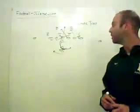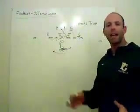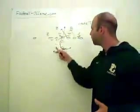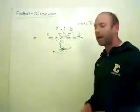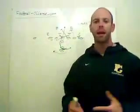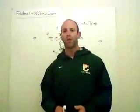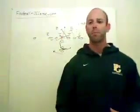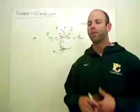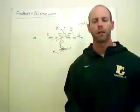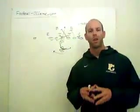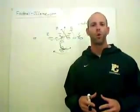The inside trap is a really simple play that we can run out of any formation that you want to run it out of. You can run it out of the I formation that we've got drawn up here, you can run it out of a split back, you can run it out of a shotgun formation whether it's one back, great play out of a pistol. There's just a lot that you can do, and you can run it out of an empty formation and use the quarterback to run the trap as well. So you've got a lot of options as far as how you want to run this play.